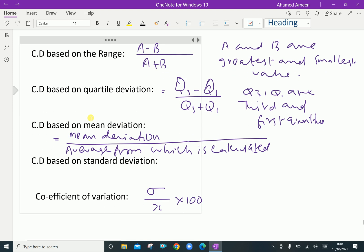CD based on Quartile Deviation is (Q3 - Q1) / (Q3 + Q1), where Q3 and Q1 are the third and first quartiles.